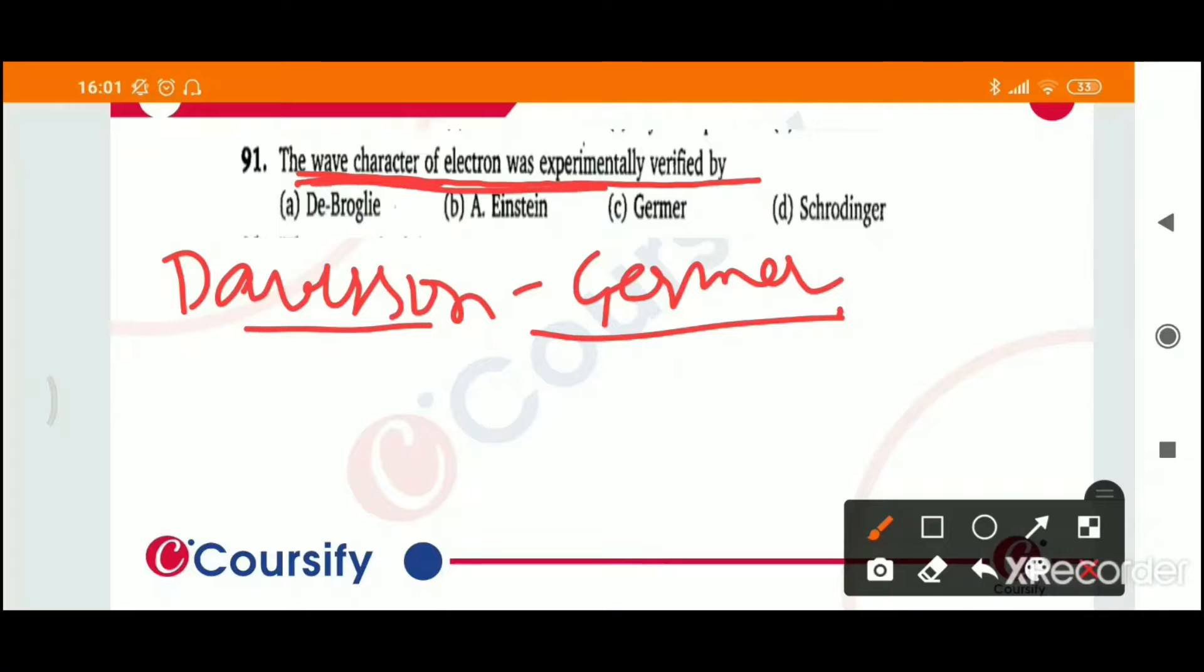So कौनसा option correct हो जाएगा? Option C correct हो जाएगा. तो the wave character of electron was experimentally verified by option C, Germer.